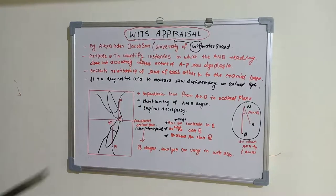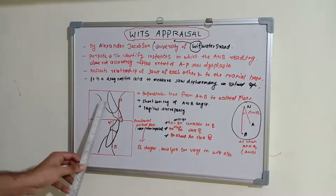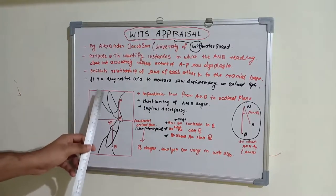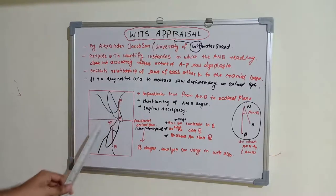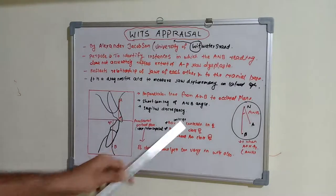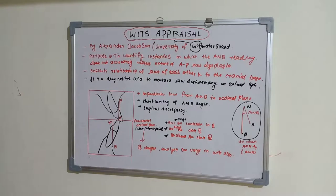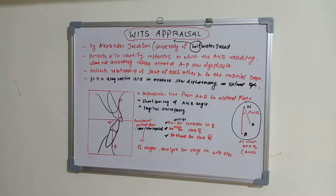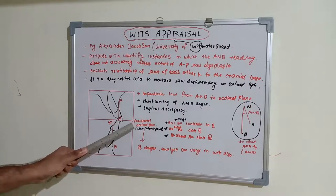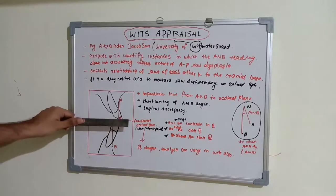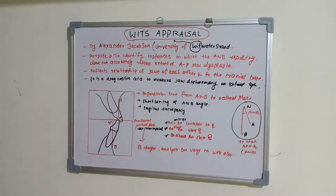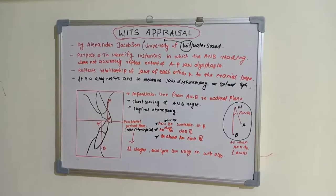In a Class II relationship, the maxillary teeth are proclined, so point A is ahead of point B — meaning AO will be ahead of BO. In a Class III relationship, BO will be ahead of AO. In many female cases, AO and BO tend to coincide. The functional occlusal plane is the key reference plane used in the Wits appraisal.